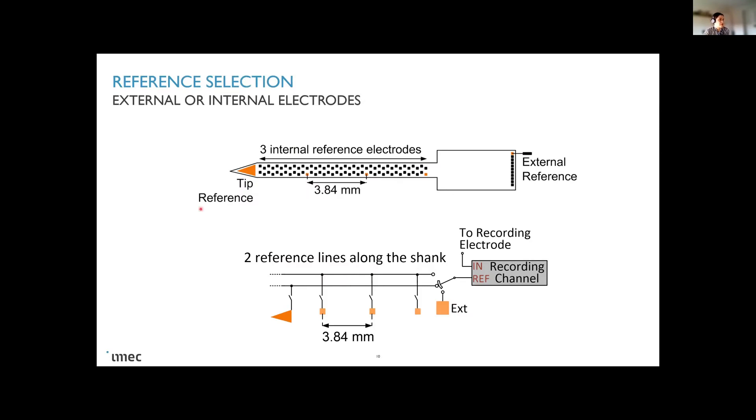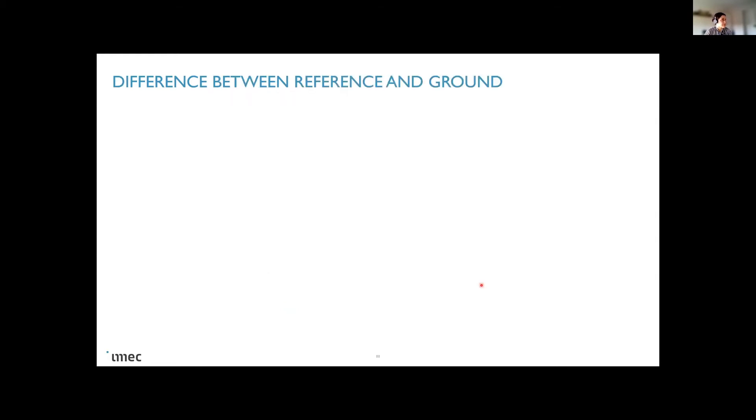For the references, we have several options in 2.0. We have a large tip electrode that can be used as a reference. We also have the possibility to connect an external electrode to a large pad. Or we have also the possibility to select some small recording pixels as references. Each channel can select which of these different options as a reference. So each channel can independently have a reference. And normally, I think for most of the use cases, a single reference is used. But there must be some experiments where having different references can be interesting.